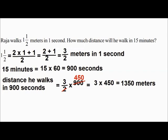Raja walks 1 and a half meters in 1 second. How much distance will he walk in 15 minutes? Convert 1 and a half to an improper fraction: that becomes 3 by 2 meters per second. Convert 15 minutes into seconds: 15 into 60 equals 900 seconds. So, distance he walks in 900 seconds is equal to 3 by 2 into 900, that will become 1350 meters.